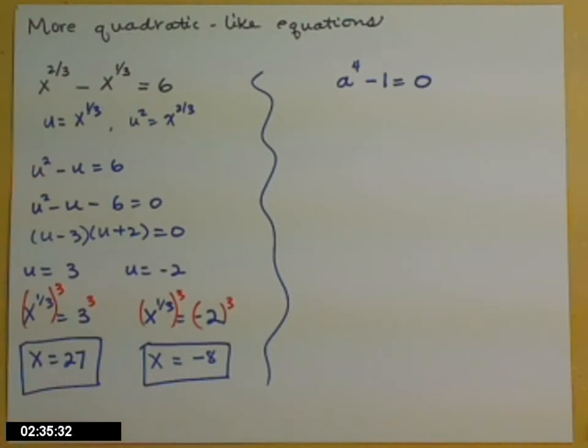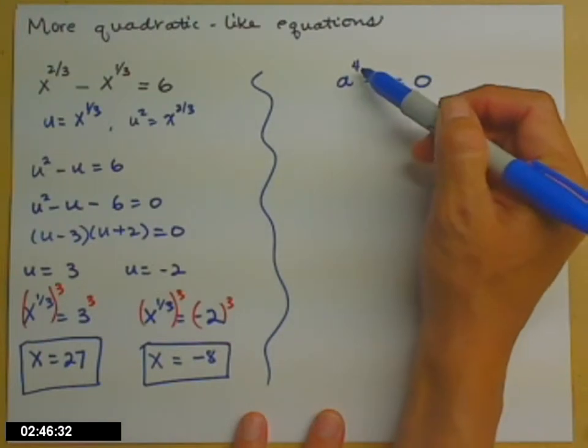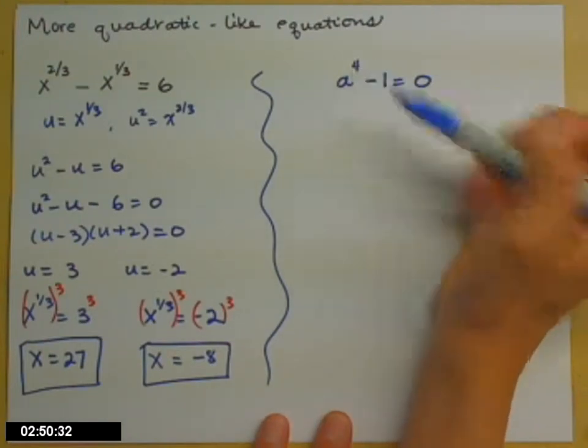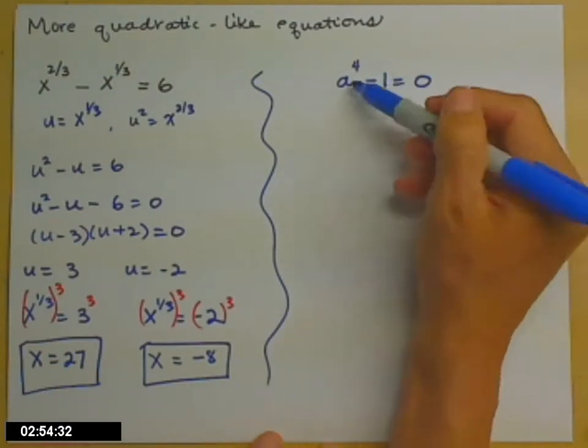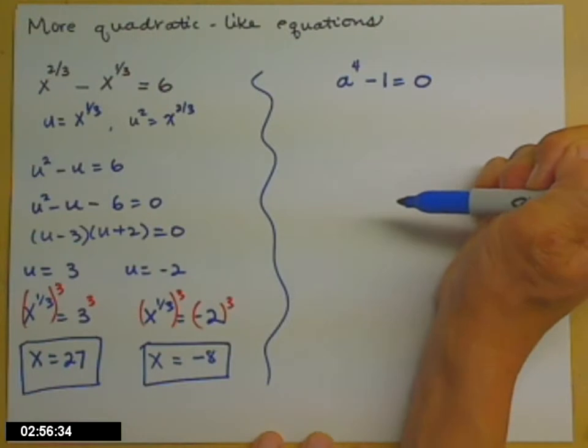Next problem that we have, a to the fourth minus one equals zero. So just a little precursor for your next class. Typically, whatever the highest power is, especially when it's a whole number like this, whatever the highest power in your equation is, that's how many answers you can look for. So in this case, I have a to the fourth, and so I'm going to look for four answers.